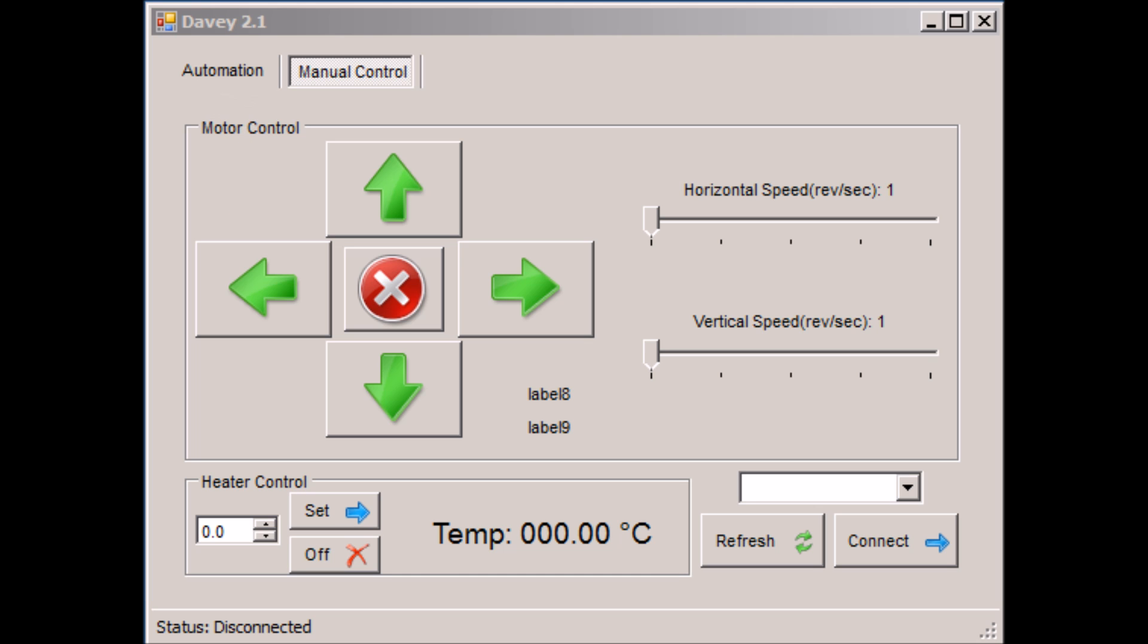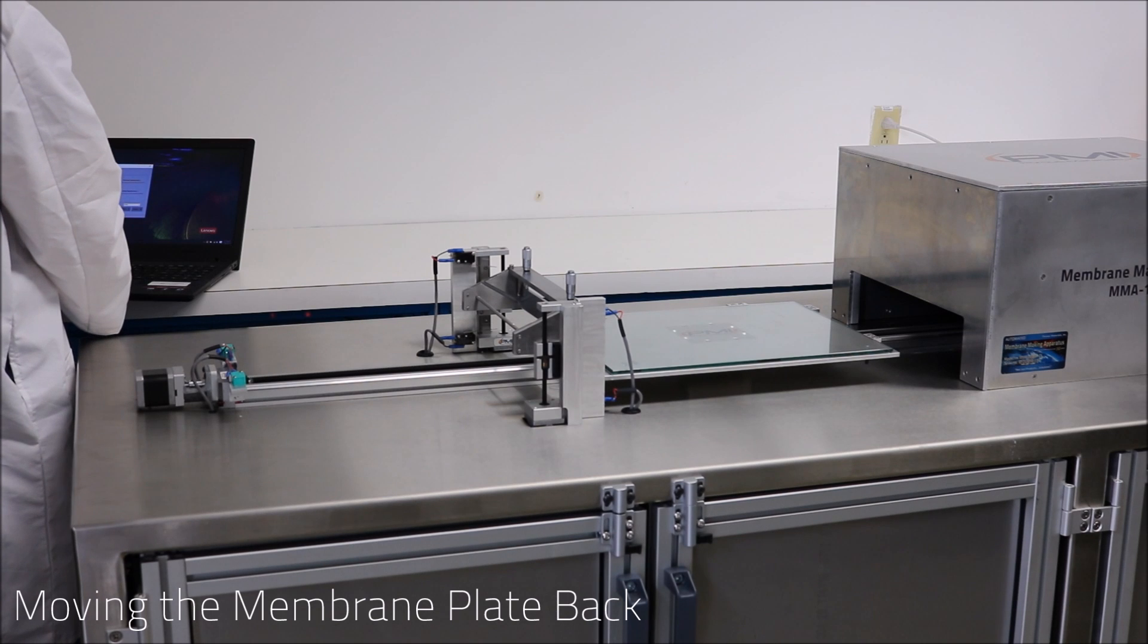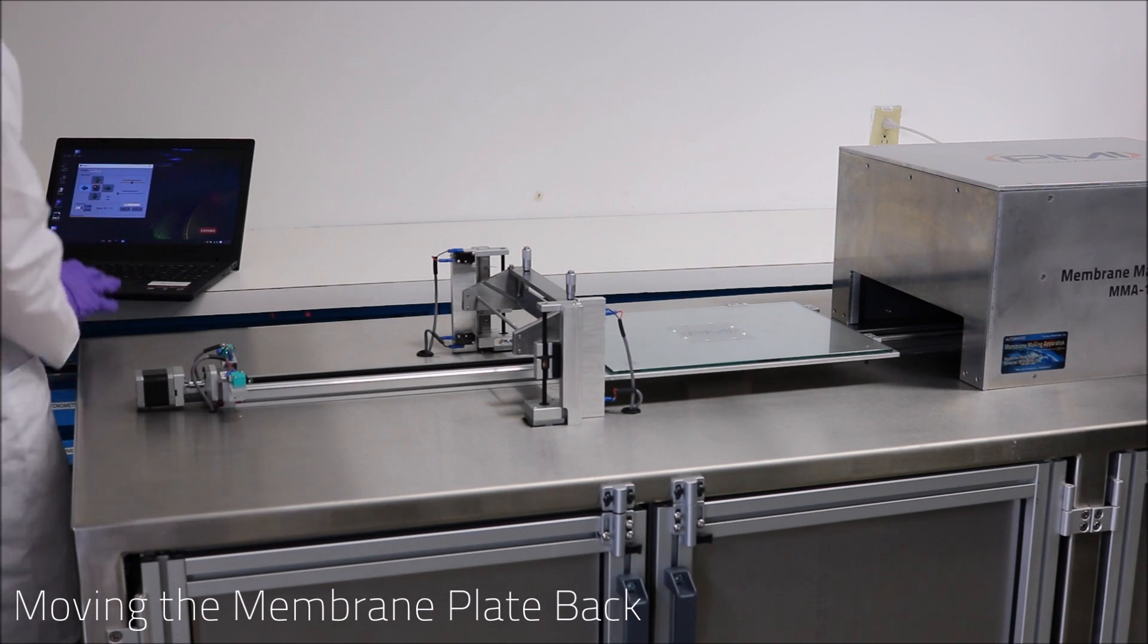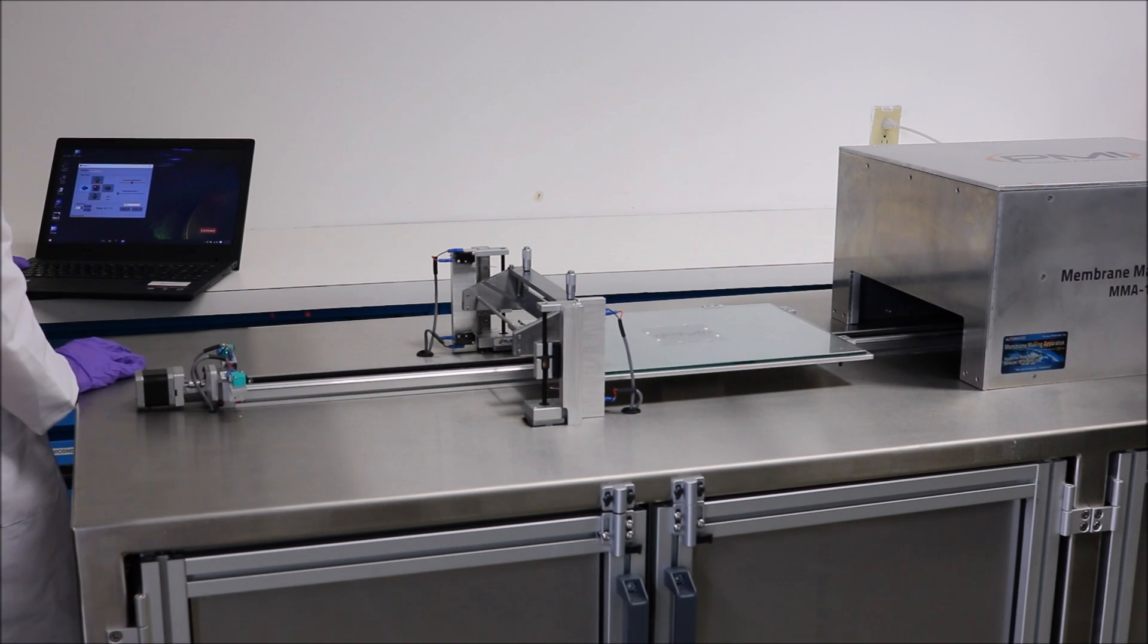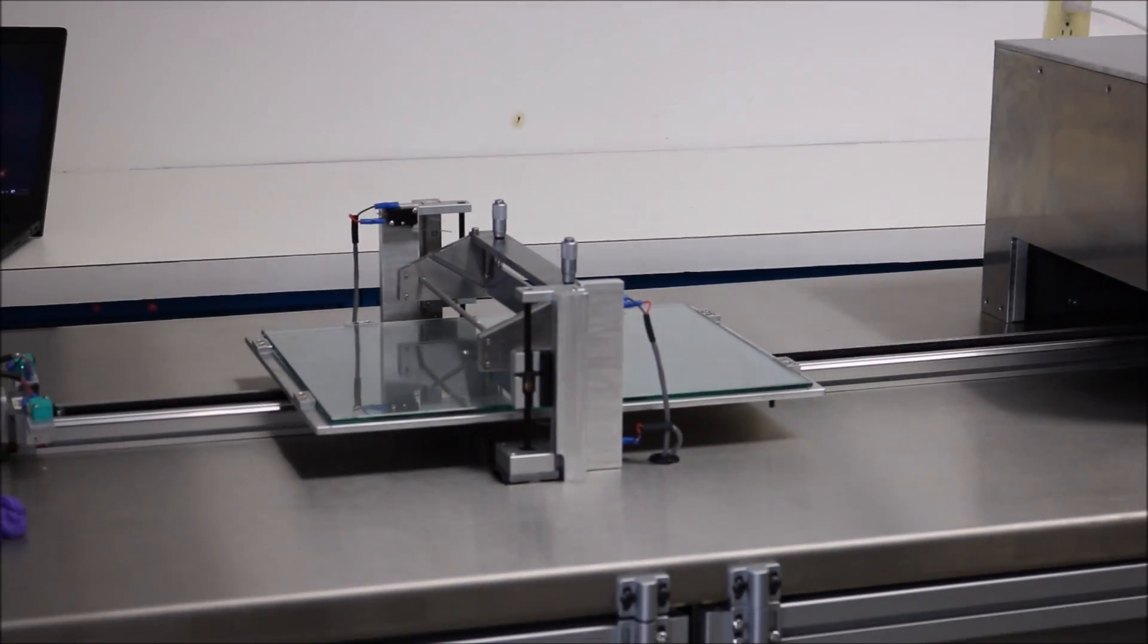Now we are going to back it up. After selecting the left directional key in the manual control, the plate should begin moving backwards. Make sure there is enough clearance under the doctor's blade so it does not scrape as it passes through. We want to back it up to about 2 inches from the end.